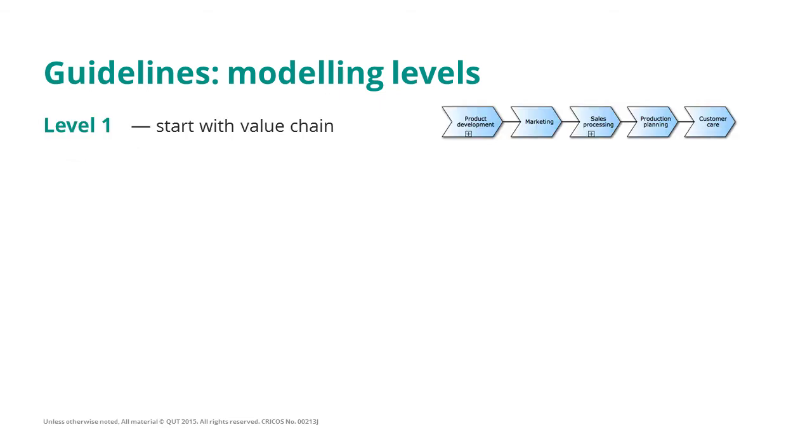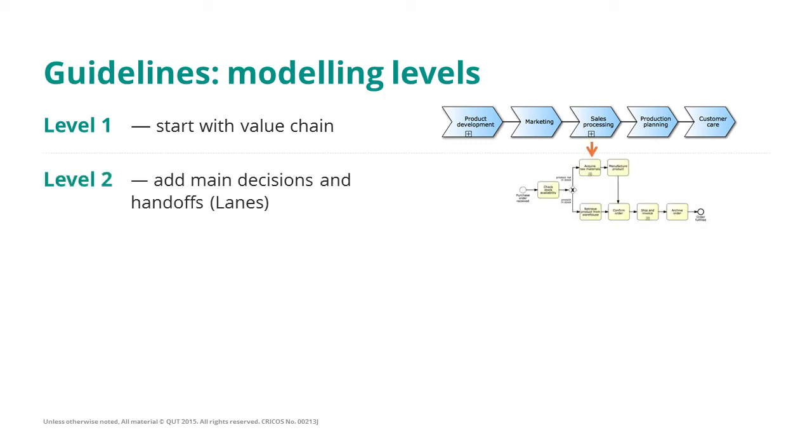We could have at least three levels of modelling abstraction. At the top level, we put the value chain. On level two, we show the main decisions and handoffs, representing the process model with the main decisions and handoffs by using lanes.